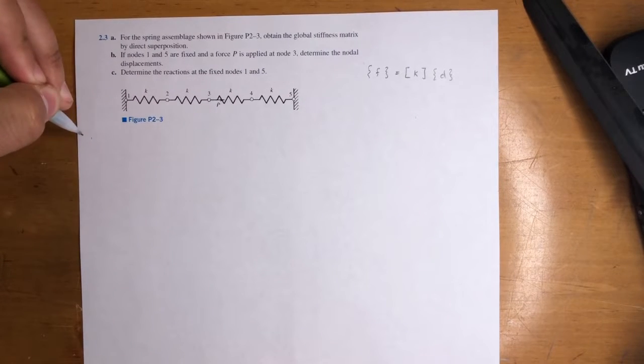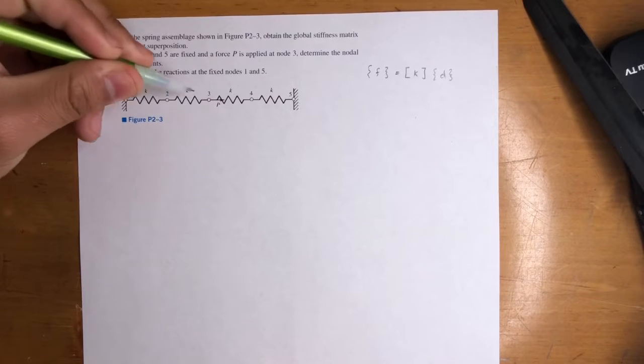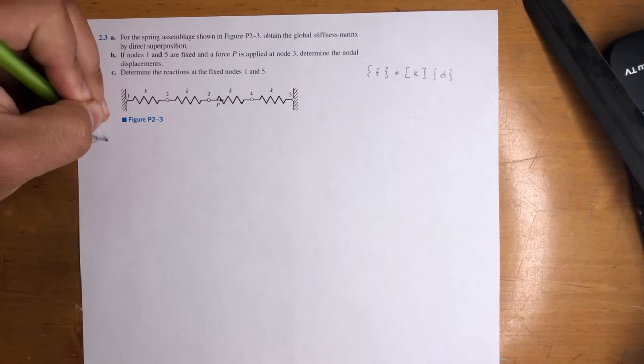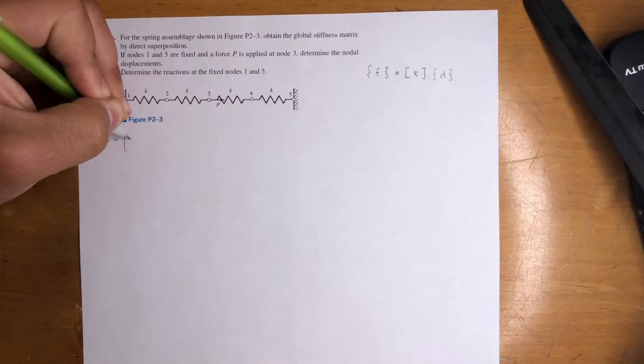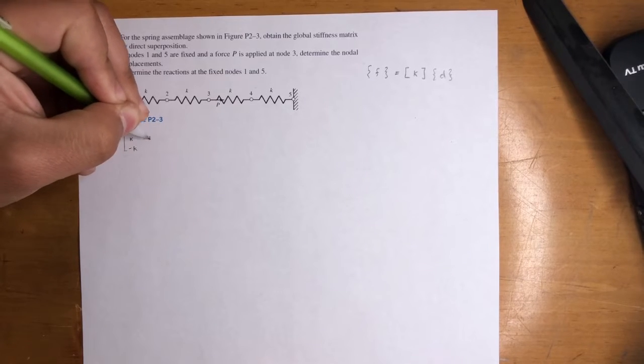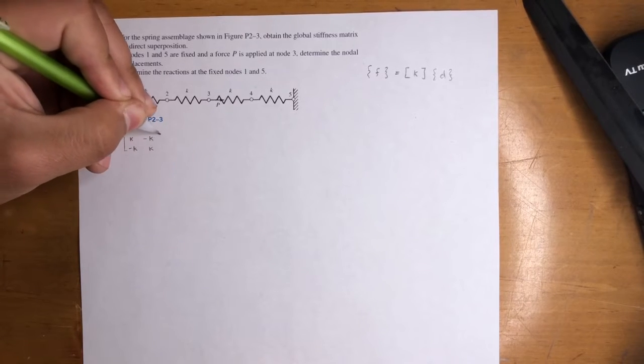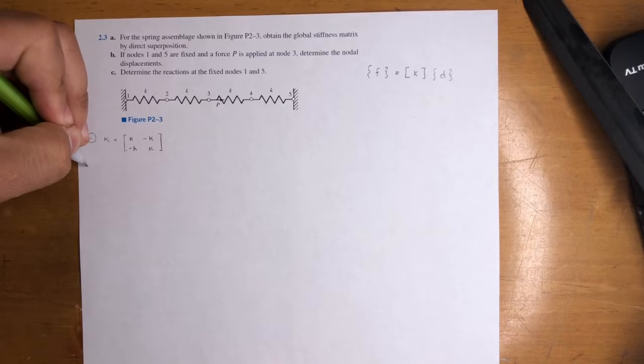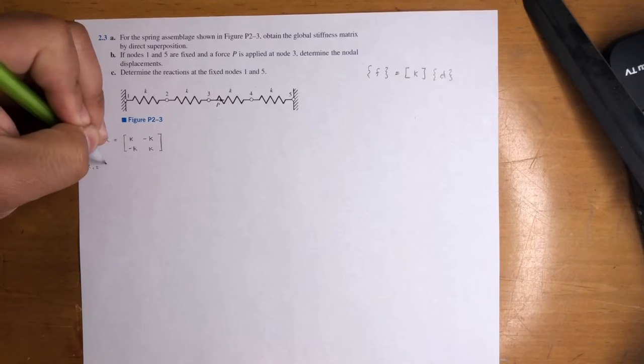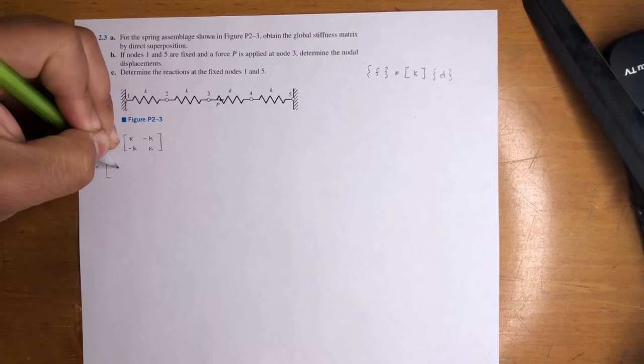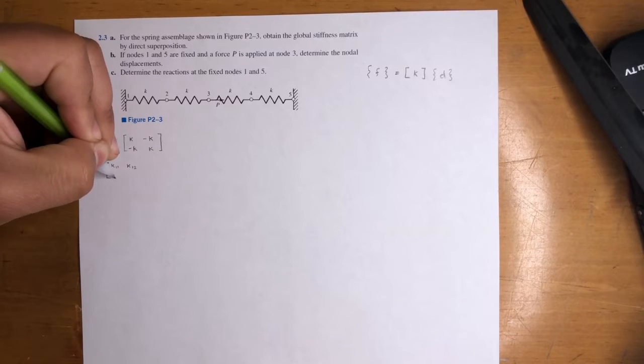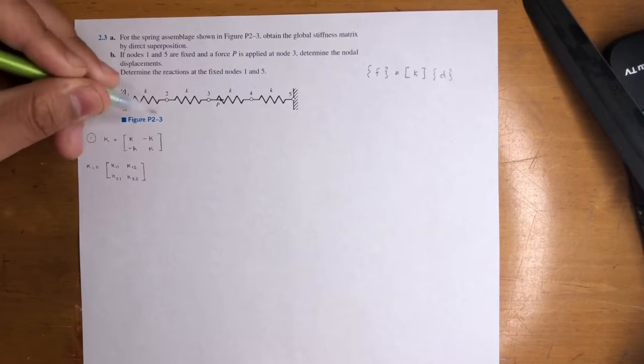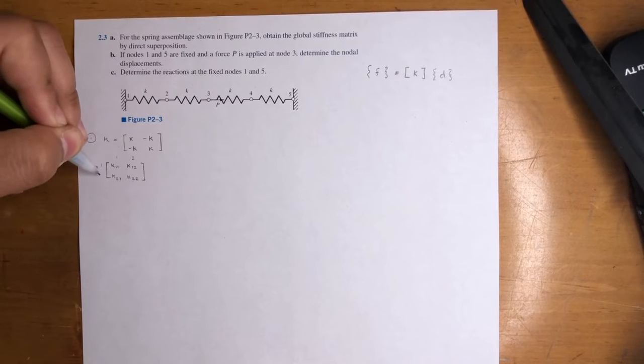So this is what I mean. When you do the little matrices for each, they're all going to be the same, right? So the matrix is going to be K equals K, negative K, negative K, K. Now for the first one here, it's going to be position, I'm going to put K1. I'm just going to put the position numbers. It's going to be K11, K12, K21, K22. Right? Because it's between nodes 1 and 2. So 1, 2, 1, 2.